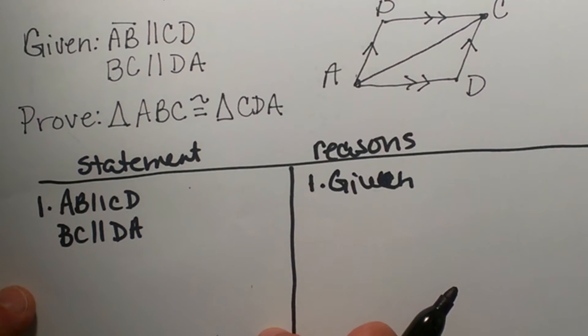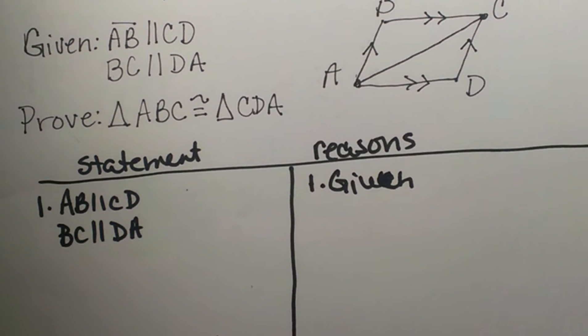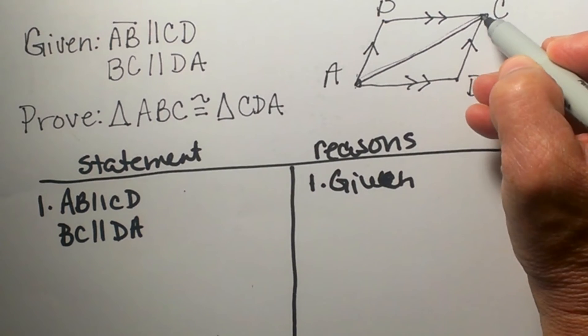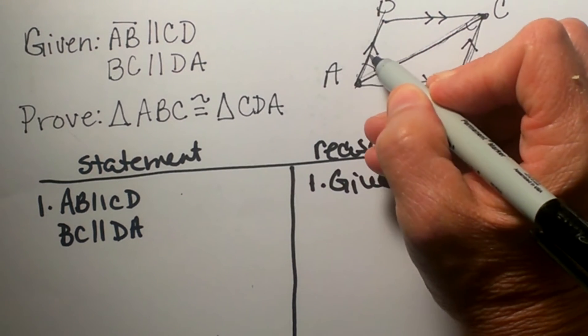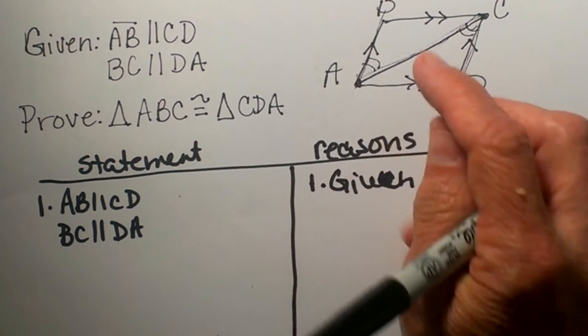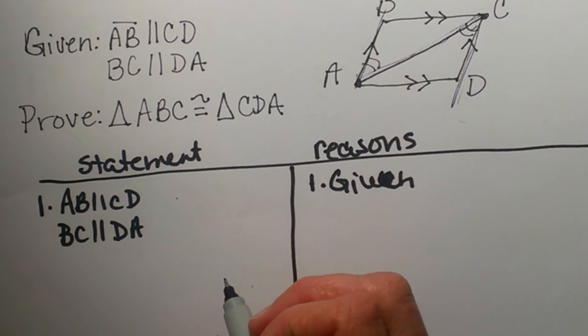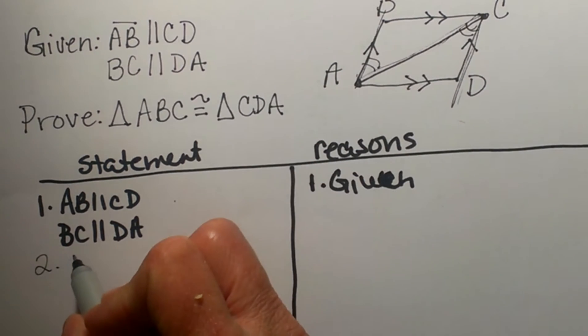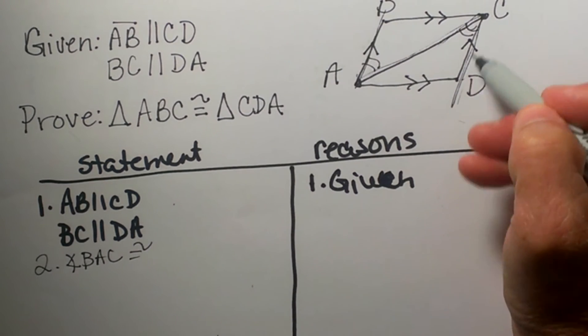Now from that information what can we conclude? Well when you have parallel lines I always say look for the Z. If I draw from B to A through this line to here I see kind of a backward Z. And in that backward Z we have these tucked in angles. Those are alternate interior angles knowing that we have AB and CD are transversals. So I can now say that angle BAC is congruent to angle DCA.